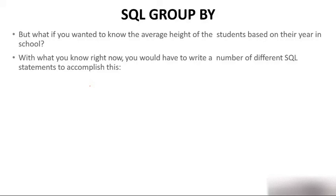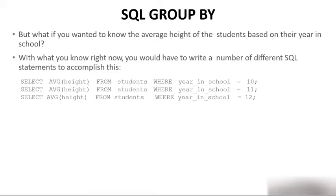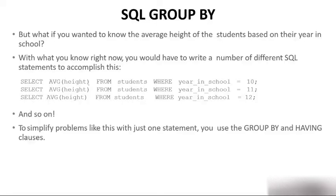But what if you wanted to know the average height of students based on their year in school? Suppose you want the average height of class 5, class 6, class 7, class 8, 9, and 10. With what you know right now, you would have to write a number of different SQL statements to accomplish this. You would write: SELECT average height FROM student WHERE year_in_school = 10, year_in_school = 11, 12, and so on.